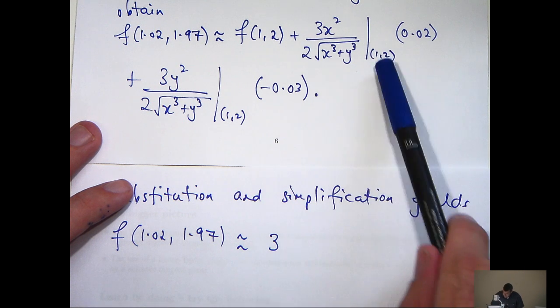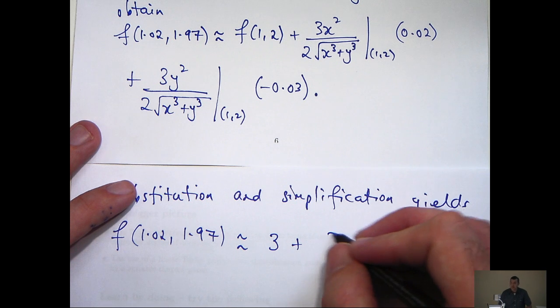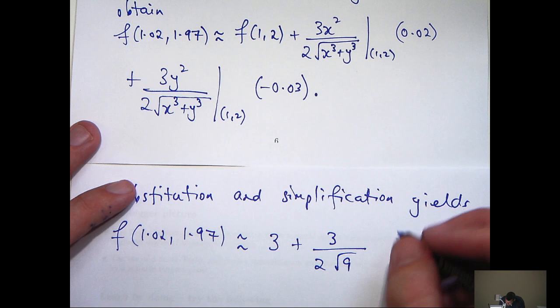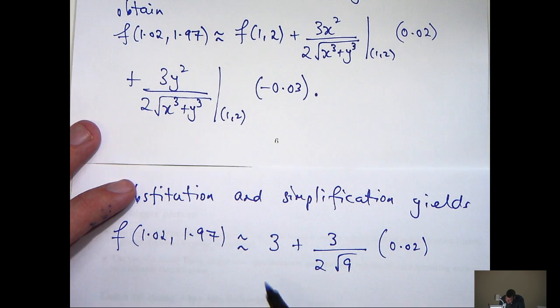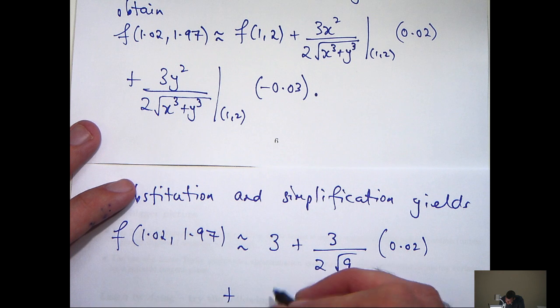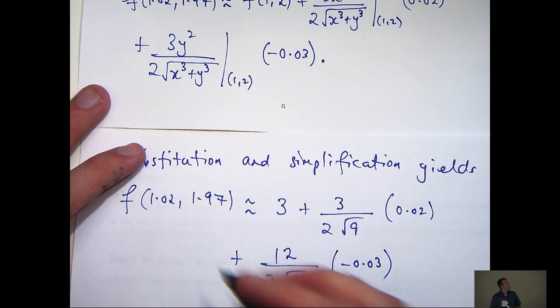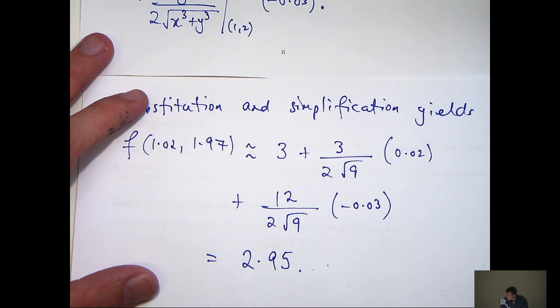So this first term is going to be the square root of 9, which is just 3. Over here, we substitute in and we're going to get 3 on the top and 2 times the root 9 down the bottom, times 0.02. And over here, we're going to get something like this, just substituting in. Now just simplifying all of this, you'll get 2.95.